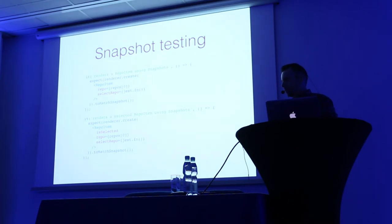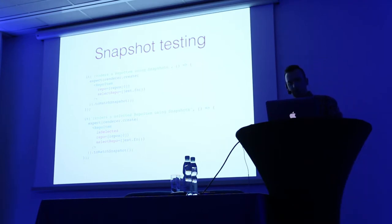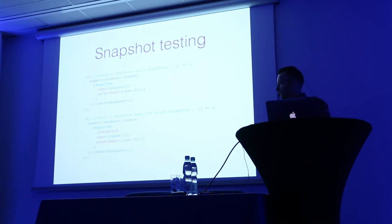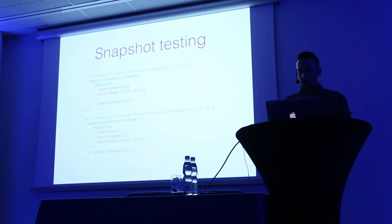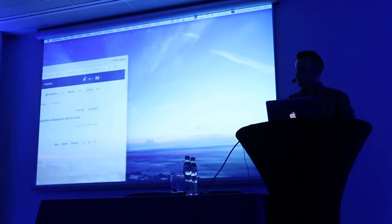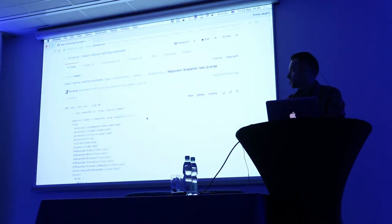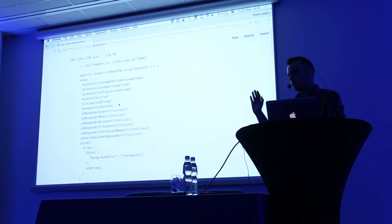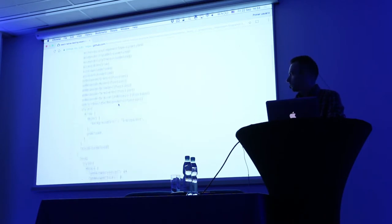First I will show you the same example with the same component, then we will go to another code that is not React code. Here we use this renderer utility - a small package from React. We can actually render this component as a JavaScript object and we don't really need to fake a DOM or a native mobile environment. With Jest we can call expect toMatchSnapshot. For the selected repository it's exactly the same. What this is going to do is generate snapshot files - let me show you those files.